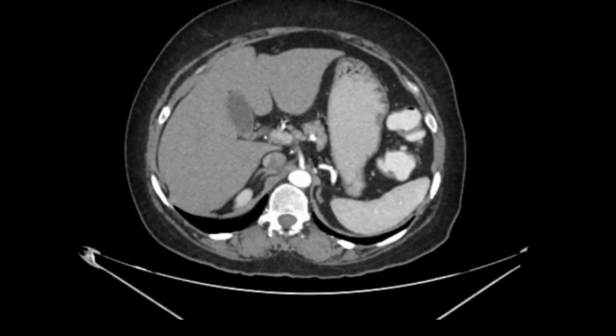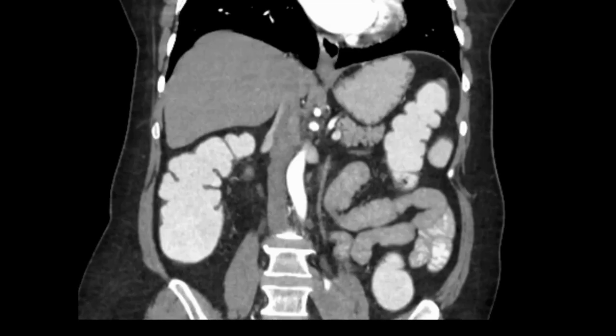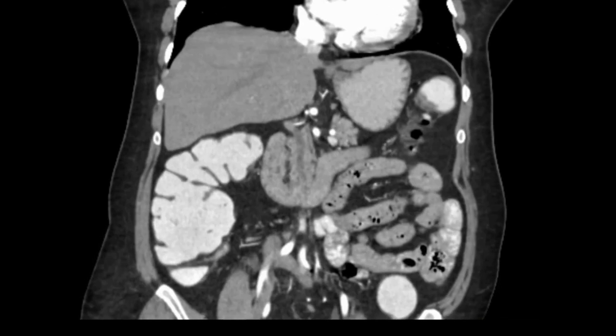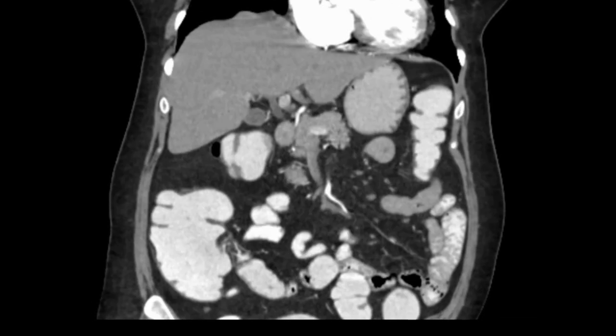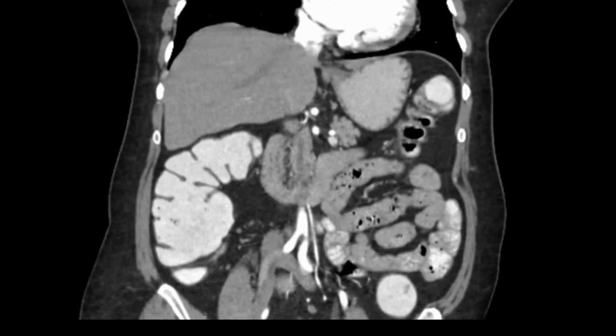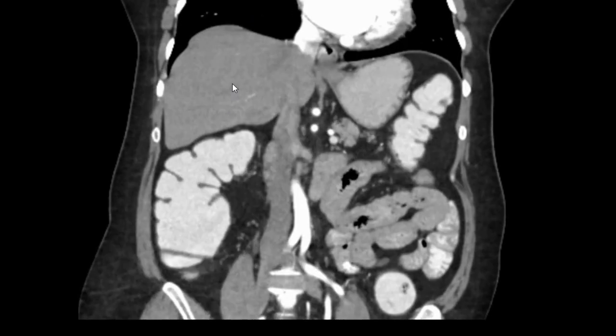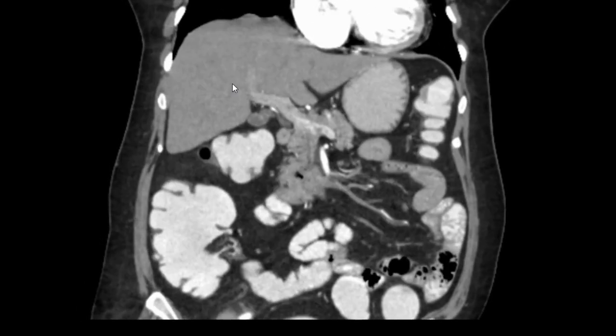Now we will see the same structures in the coronal section so that you can revise them. In this coronal section — if you see the person standing it is a coronal section — from above downwards we will revise the same structures. This is the liver.